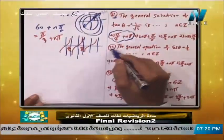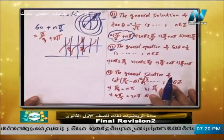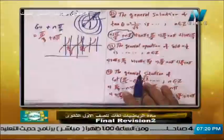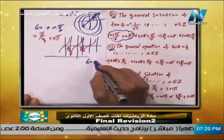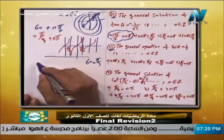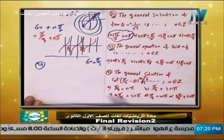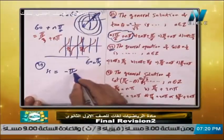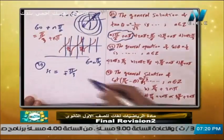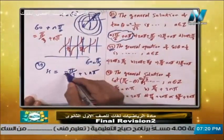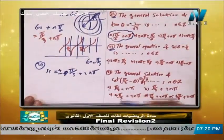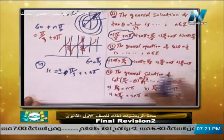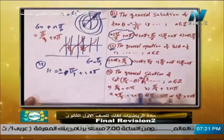We can write this as pi/6 + n·pi. Now for the general solution of cosine theta equals 1/2: using shift cosine(1/2), alpha equals 60° or pi/3. The general solution for cosine is theta = ±pi/3 + 2n·pi.